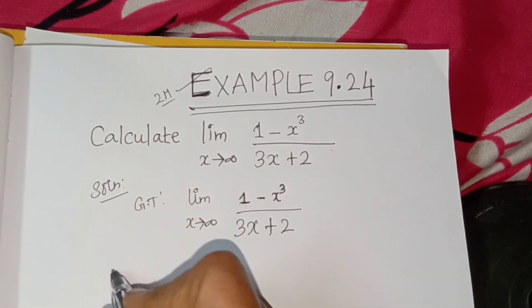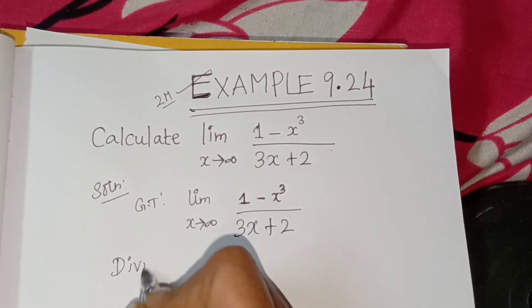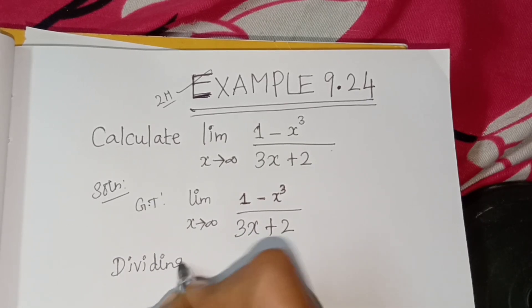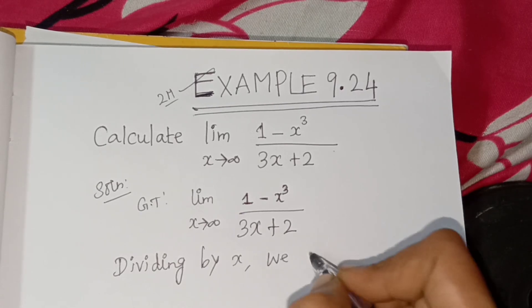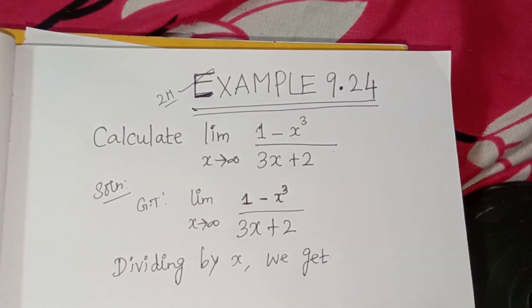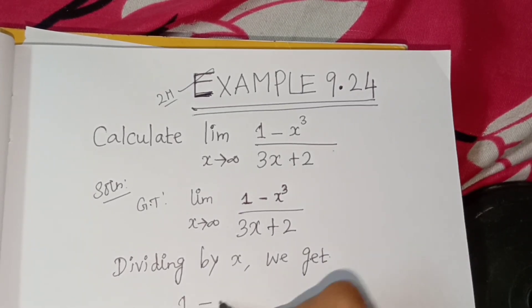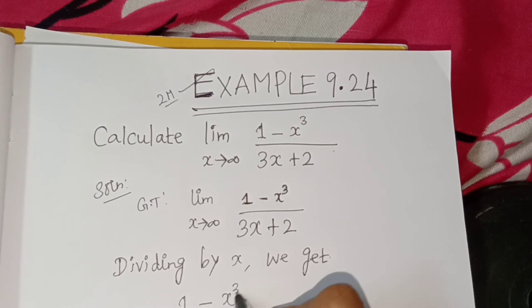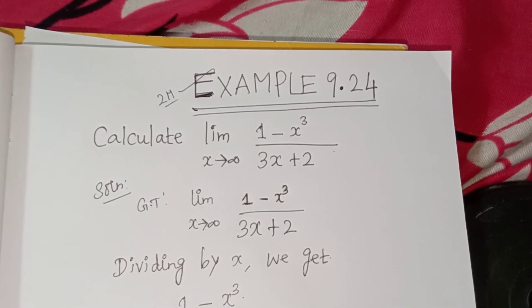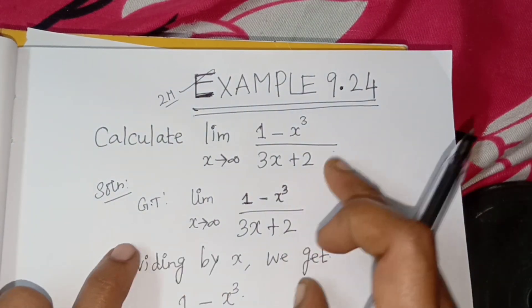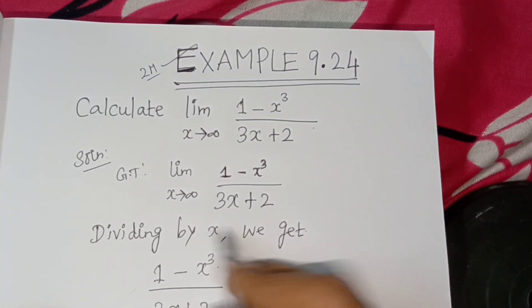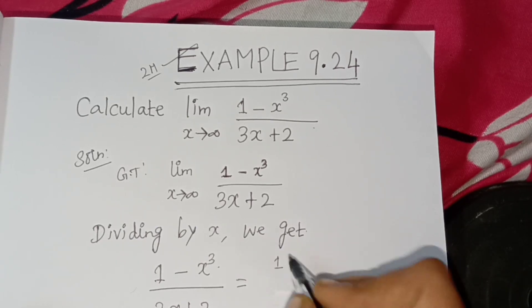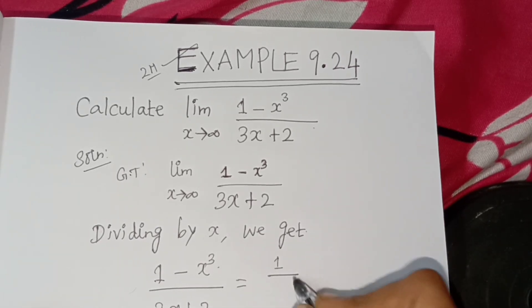So dividing by x we get 1 minus x cube divided by 3x plus 2. Now divide numerator and denominator by x.